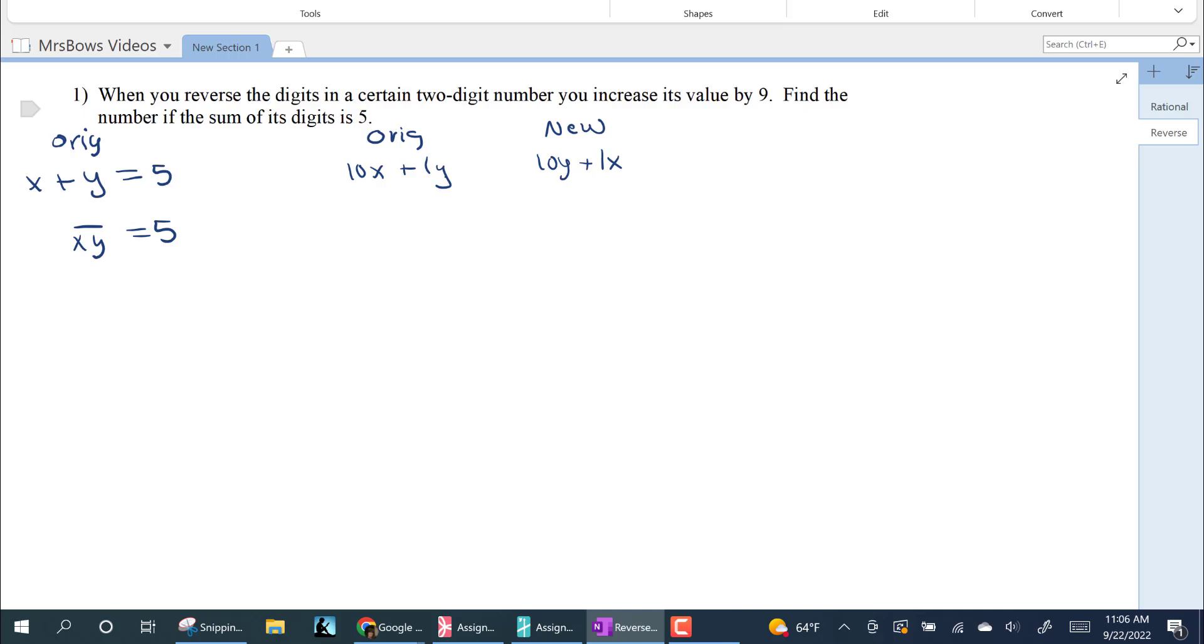But when you reverse, the values increase by nine. So what you do is you take the new number, subtract the original number to get the increased value of nine.